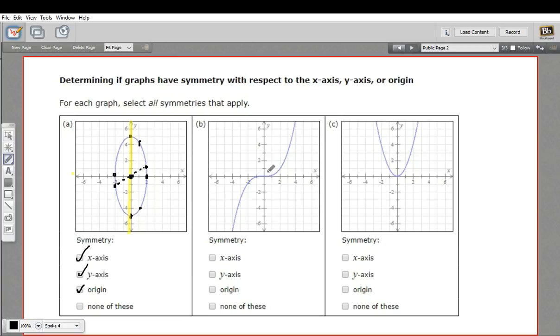Let's look at this next one, graph b. So it doesn't have x-axis symmetry. If I folded it over the x-axis, would the pieces match up? Well, no, because this arm would go up here and this arm would go down here. So it doesn't have x-axis symmetry.